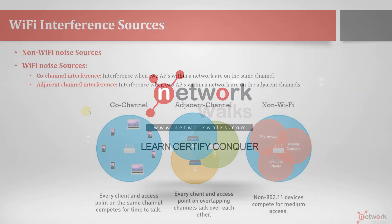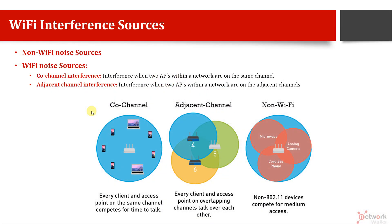There are different types of Wi-Fi interference sources. Mainly there are two types: one due to non-Wi-Fi devices and the other one is due to Wi-Fi sources, meaning another Wi-Fi is creating a problem for our Wi-Fi.